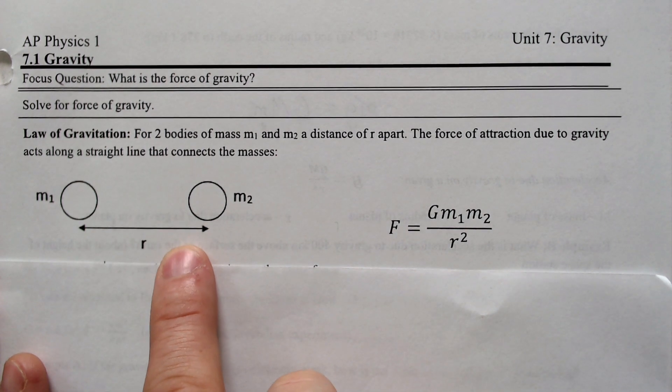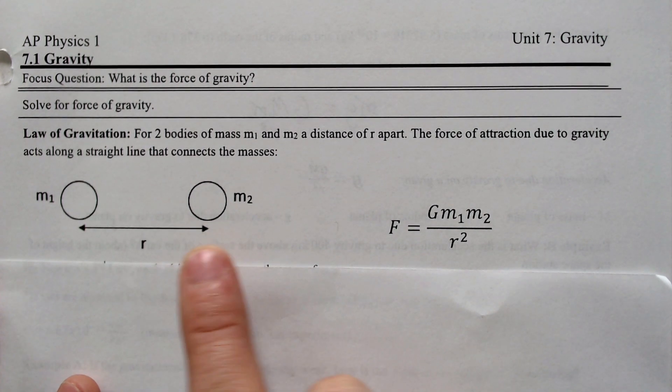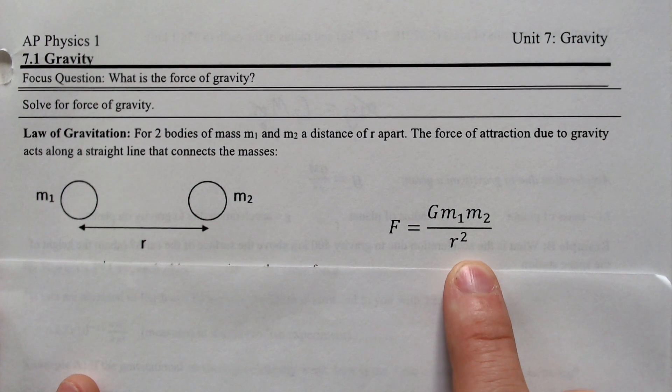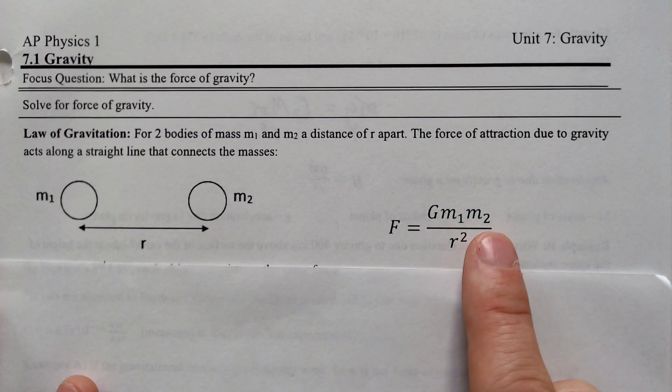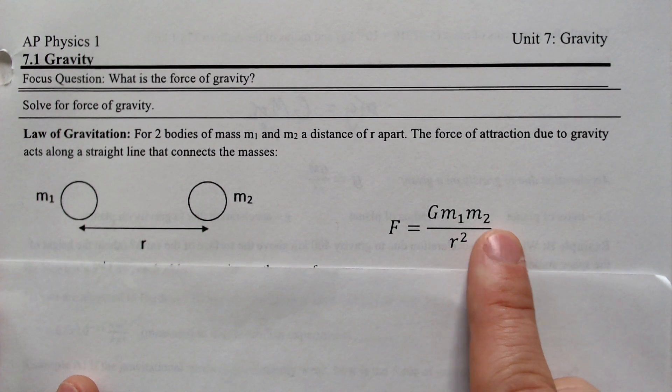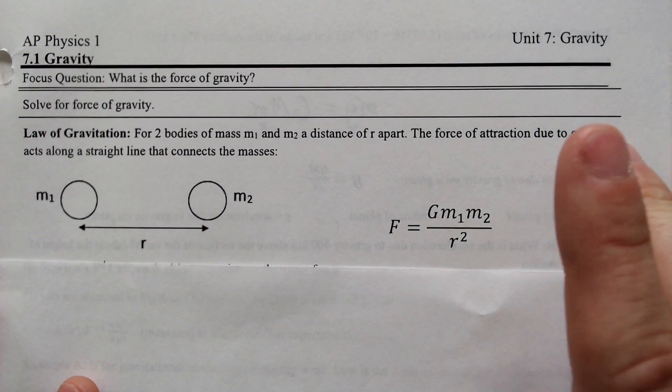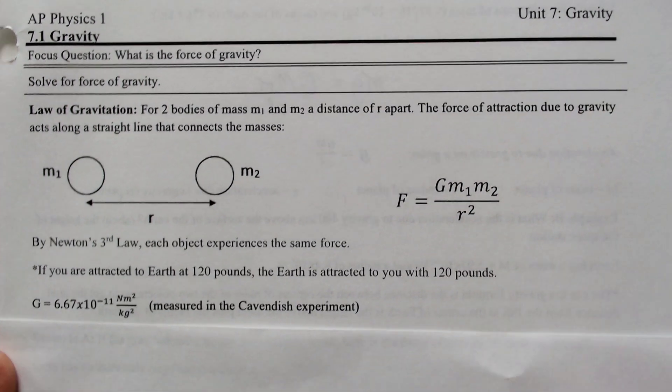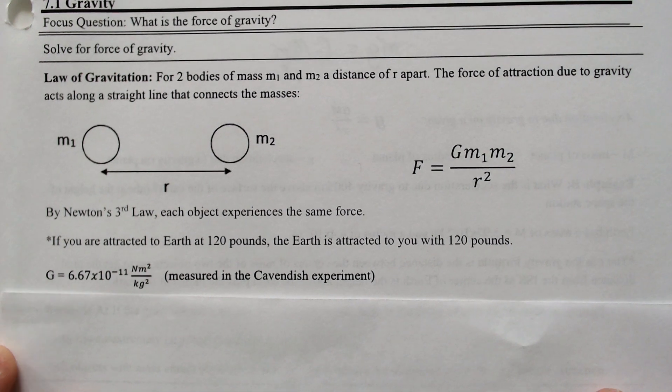So the distance between them matters, and it's inversely proportional to distance, which is why we have divided by r squared here. And then the masses of each object are here. Now, this big G stands for the universal gravitational constant.